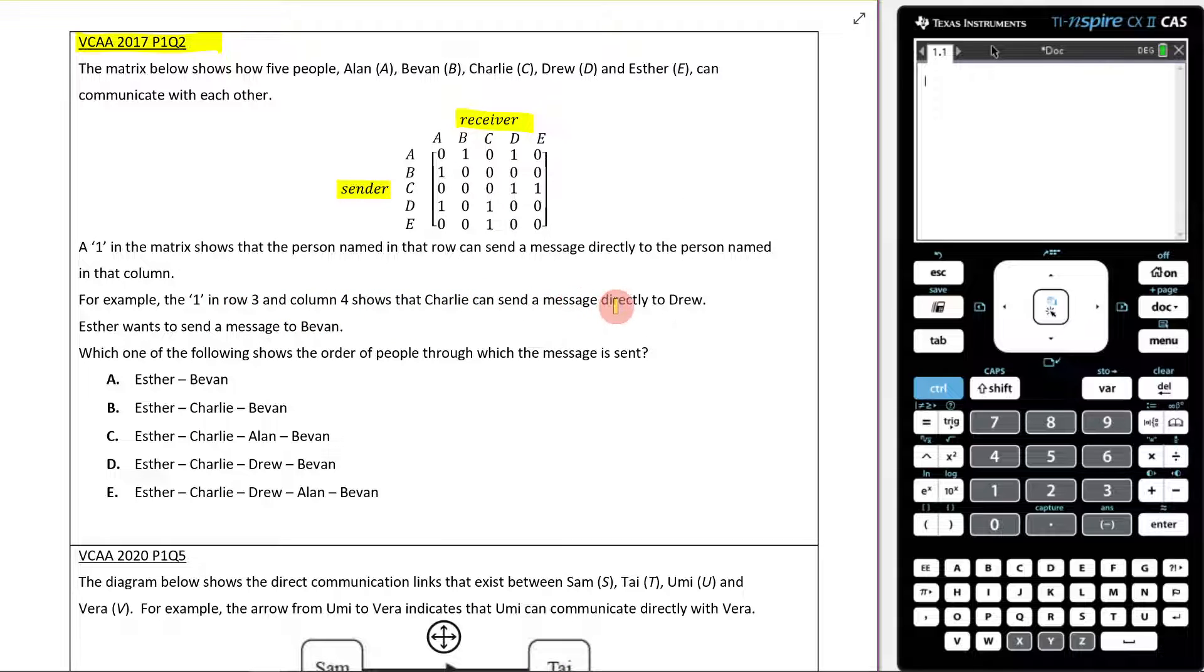Esther wants to send a message to Bevan. Which one of the following shows the order of people through which the message is sent? Now, if we look here, hopefully you can see that Esther can't send a message directly to Bevan because there's a zero there. The only person that Esther can send a message to is Charlie.